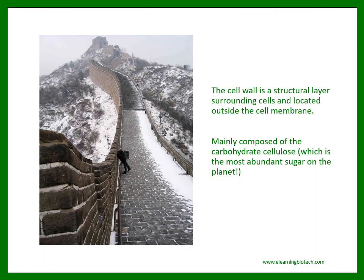Like China has its Great Wall, plant cells and most bacteria also have a cell wall. It is a structural layer surrounding cells, located outside the cell membrane. It is composed mainly of the carbohydrate cellulose, which is the most abundant sugar on the planet.